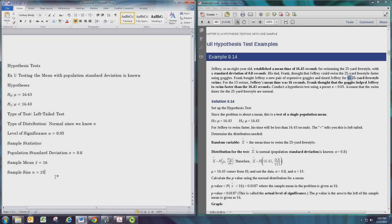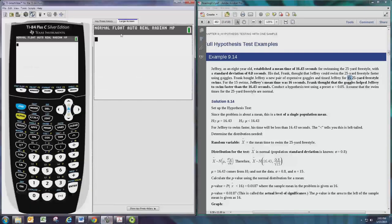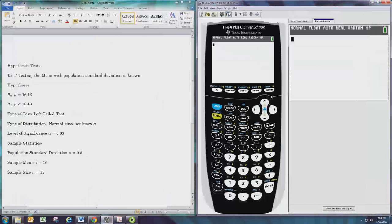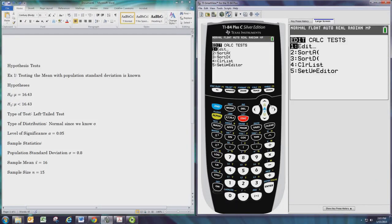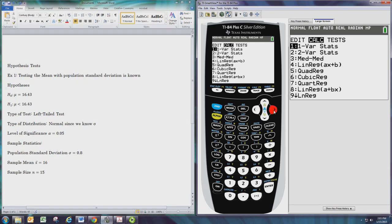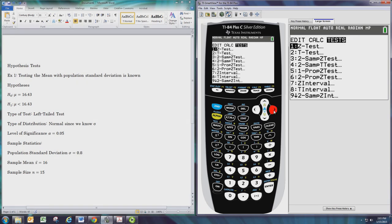At this point we're ready to put this information into the graphing calculator and use it. So we'll hit stat, then go to the right to the tests menu, and we are doing a z-test. So we'll go to z-test, the first option.